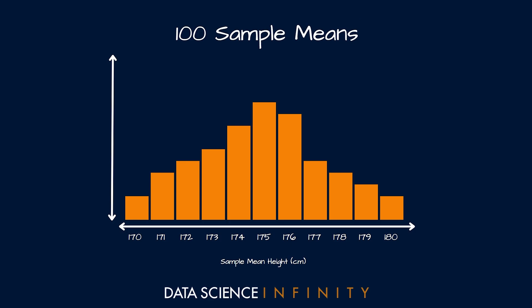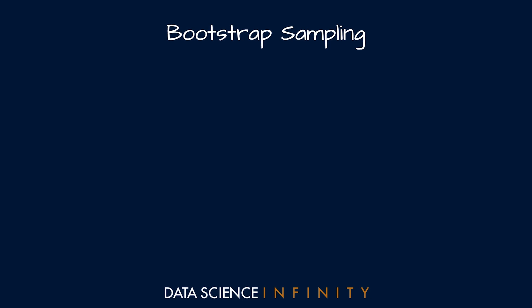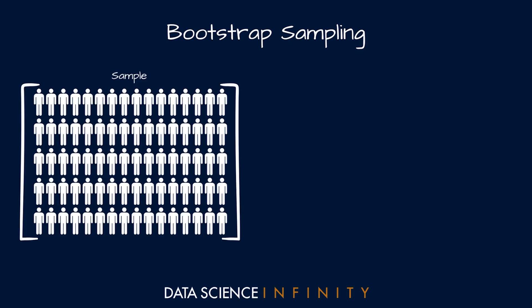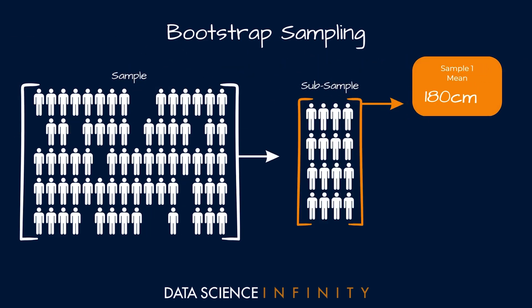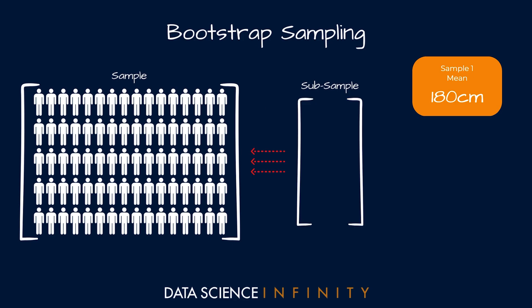Before we wrap up, I want to touch on a sampling concept known as bootstrapping. In our earlier example around the heights of men in the USA, we needed around 100 samples of 40 men — requiring us to find and measure 4,000 men, which would be time consuming and expensive. Another approach is bootstrap sampling: start with a random sample of 400 men, then randomly select a sub-sample of 40. Calculate and record the mean height for that sub-sample.